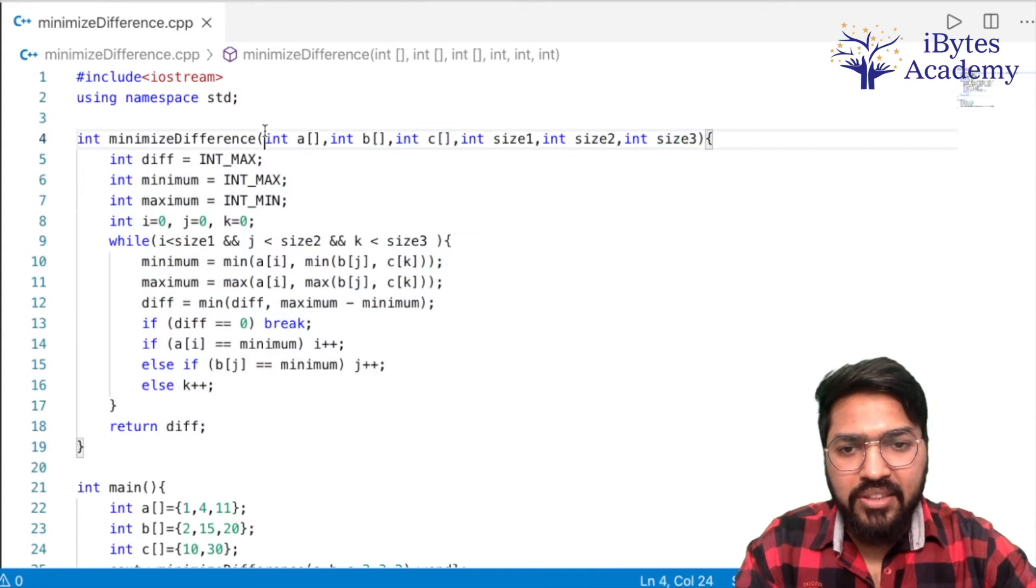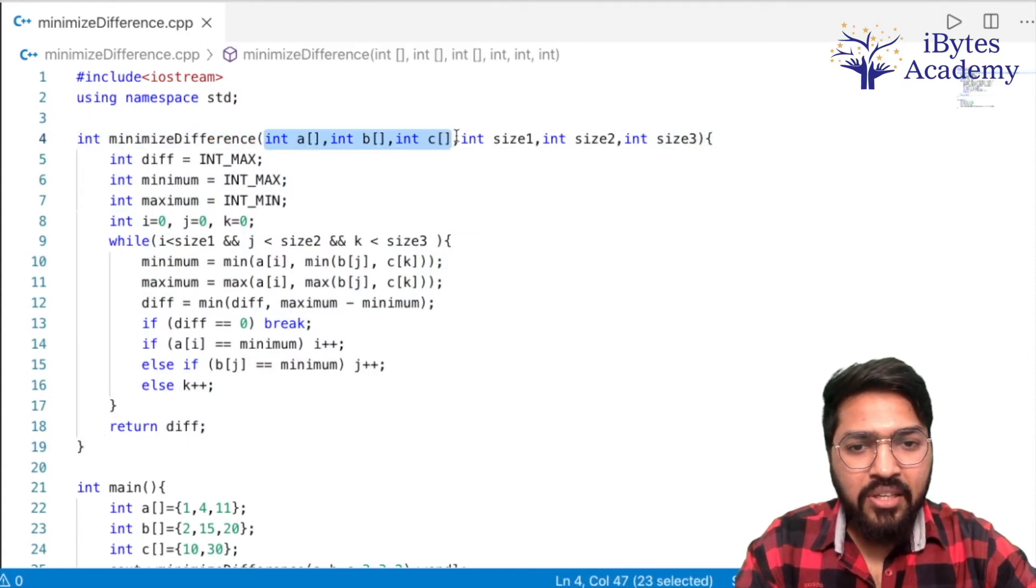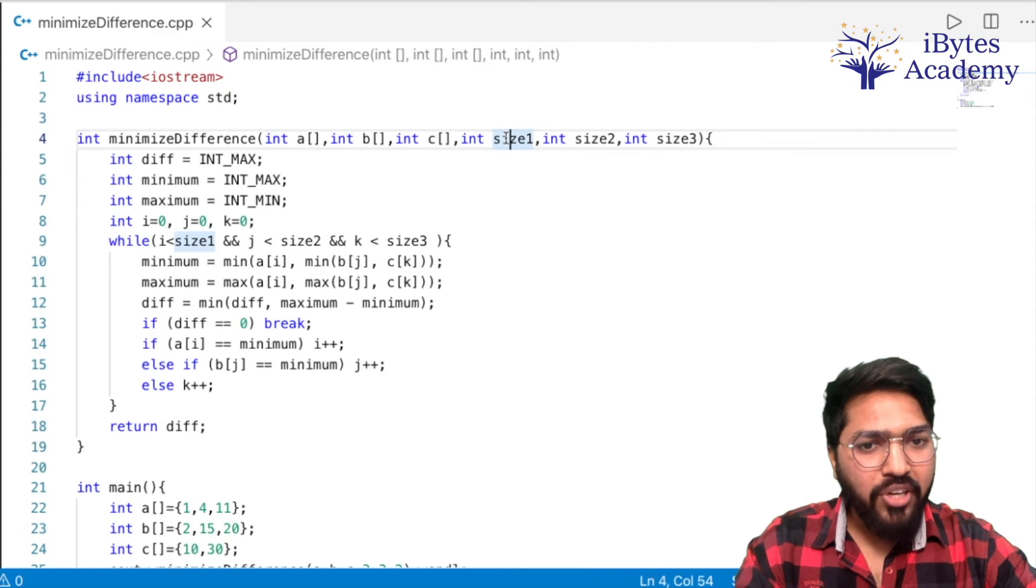minimumDifference. So we're getting three arrays: A, B, C. And size1 is the size of A, size2 is the size of B, size3 is the size of C.